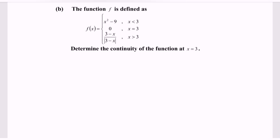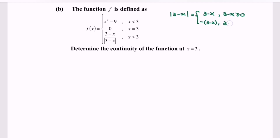Before we begin the discussion, kindly focus on the definition. Based on the definition, we have the modulus of 3 minus x, where the definition gives 3 minus x for the domain 3 minus x greater than or equal to 0, and negative (3 minus x) where the domain is 3 minus x less than 0. That is the definition for the modulus, or we can say the absolute value.